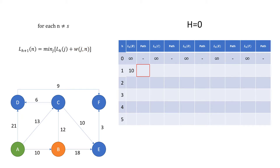The path column is then filled in with the path this route has taken. In this case, the path taken is node a direct to node b. We now go on to our next node and the next cells of the table.